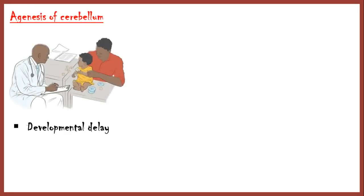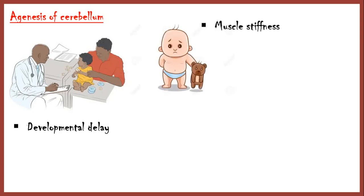Agenesis of the cerebellum causes developmental delay, especially in motor coordination, walking, and maintenance of balance, muscle stiffness, and paralysis of the lower limbs.